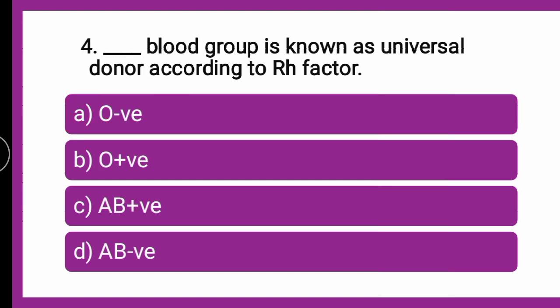The next question is: which blood group is known as the universal donor according to the Rh factor? Whether O negative is the universal donor, AB negative is the universal donor, or AB positive — which blood group amongst the given is a universal donor? Put your answers in the chat box. It is a very easy question; we will go for the explanation.